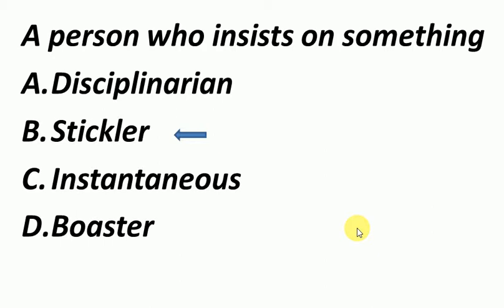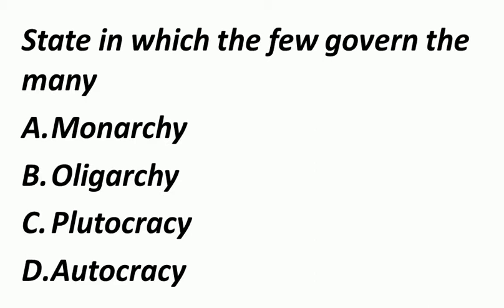State in which the few governed the many — इसका answer होगा Oligarchy. एक ऐसा राज्य जहाँ कुछ लोगों द्वारा बहुत सारे लोगों पर शासन किया जाता है. Monarchy का मतलब है Government by a King or a Queen. Plutocracy मतलब Government by the Rich. Autocracy मतलब Government by one person — means dictatorship.